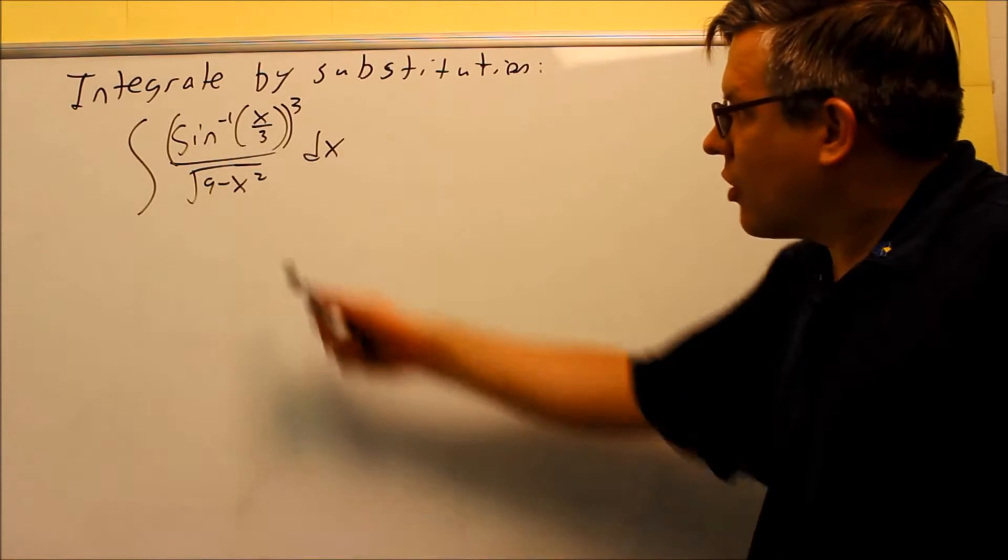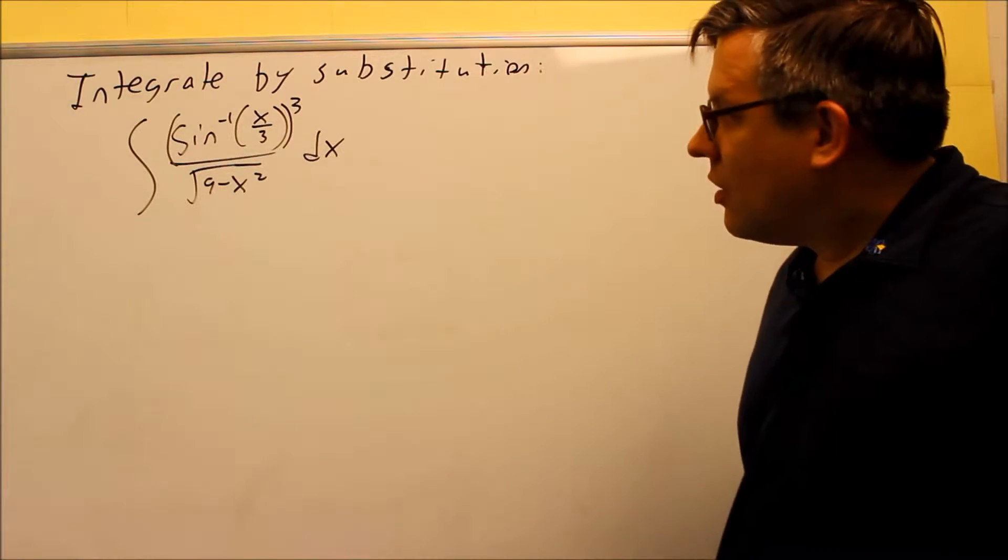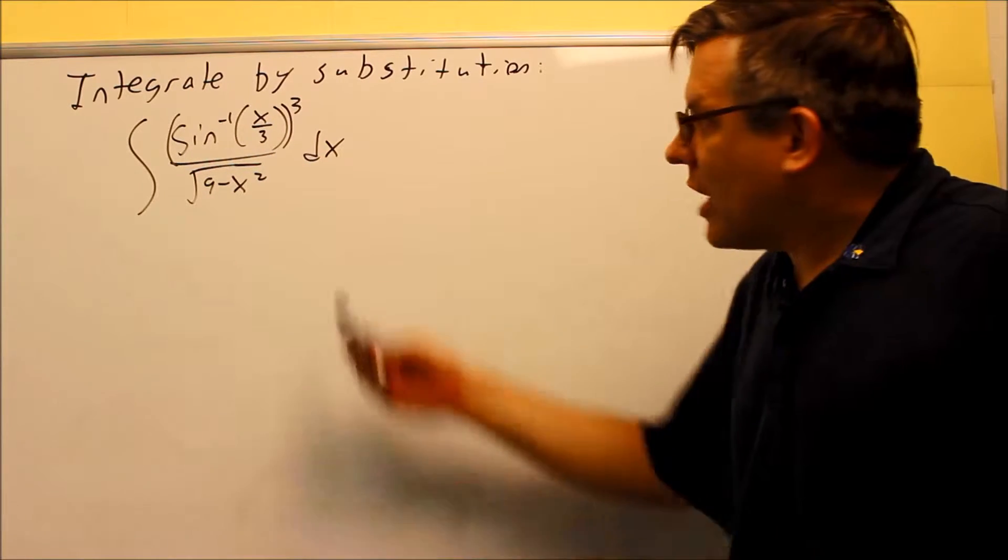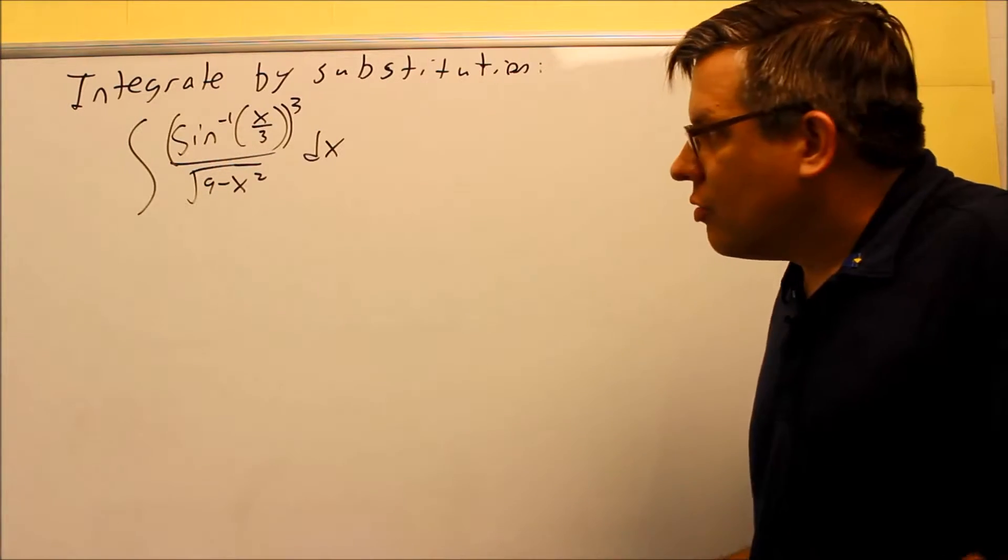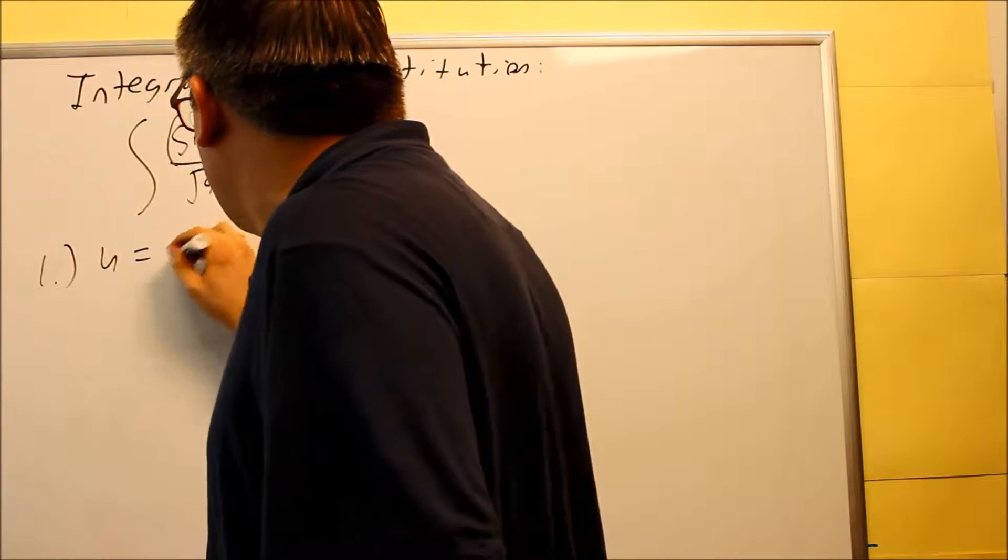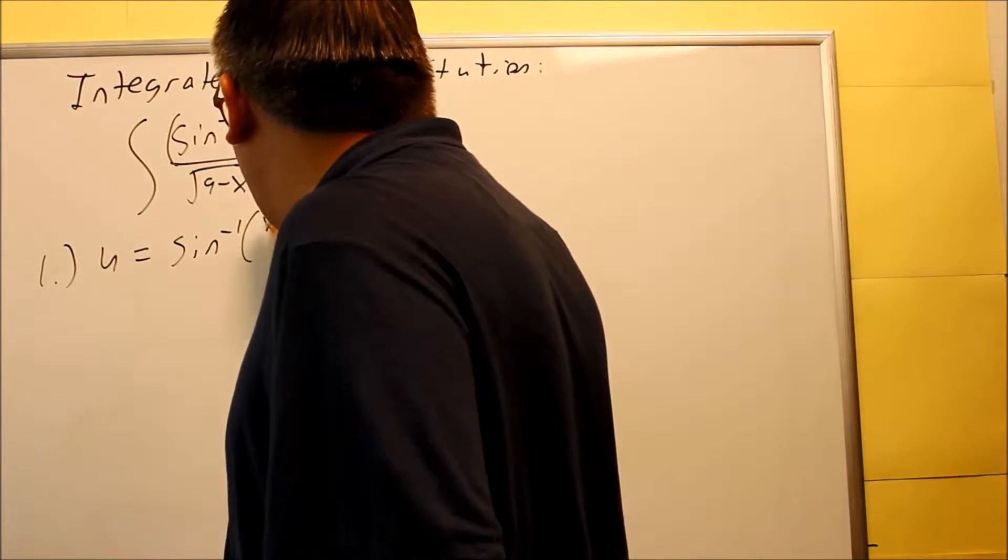This problem involves an inverse trig function inside, inverse sine. So if you see this inside of an integral, then most of the time that's what you want to use for your u. So the u for our first step here, the u is equal to inverse sine of x over 3.